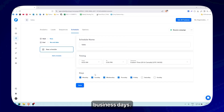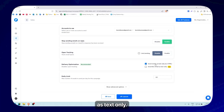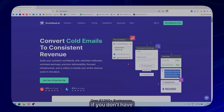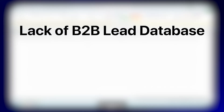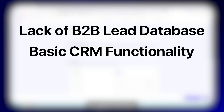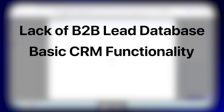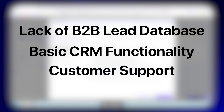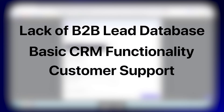But like any other software out there, neither of these tools is perfect. Now let's talk about a few things users don't love — the drawbacks. What users typically complain about SmartLead is that it lacks a B2B lead database; unlike Instantly, SmartLead doesn't offer an integrated lead database, so users need to upload their own lead lists. It also has basic CRM functionality — while it offers CRM features, they are not as robust as standalone CRM systems. Some users also report that the support team takes a long time to respond.